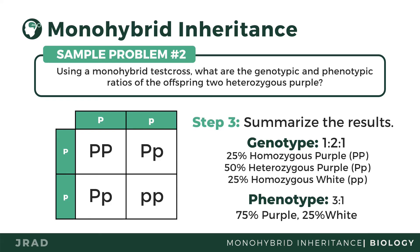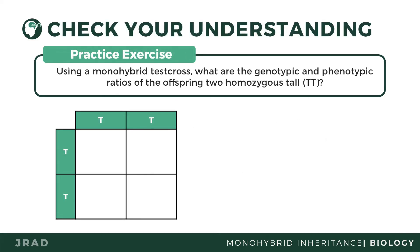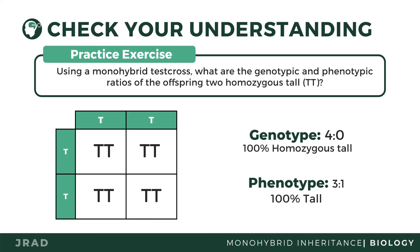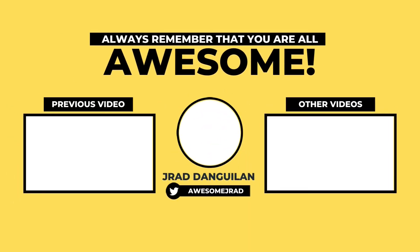Now let's check your understanding. Using a monohybrid test cross, what are the genotypic and phenotypic ratios of the offspring of two homozygous tall? You can use uppercase T to denote the dominant trait, which is tall. You may pause the video for more time. In the next lesson, we will discuss the dihybrid cross. If you like more science videos, make sure to subscribe to this channel. Thank you, and always remember that you are all awesome.